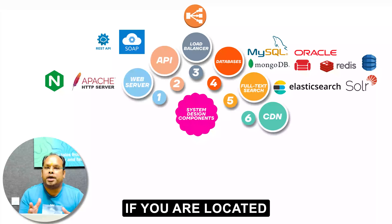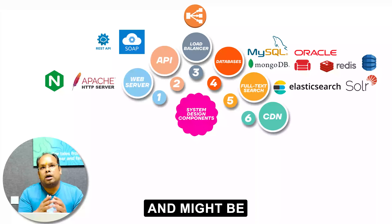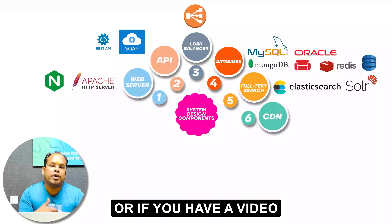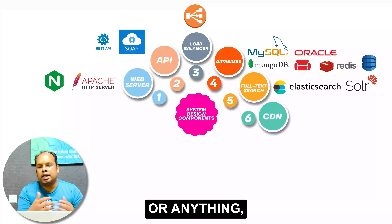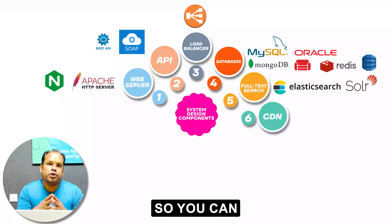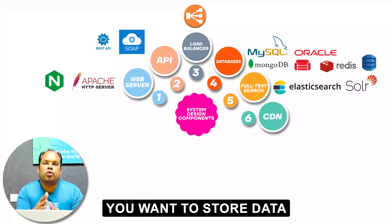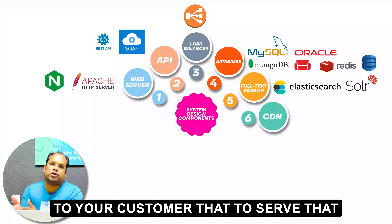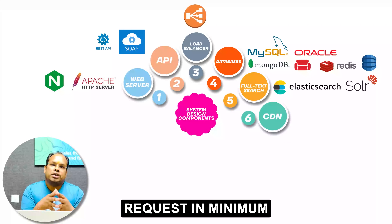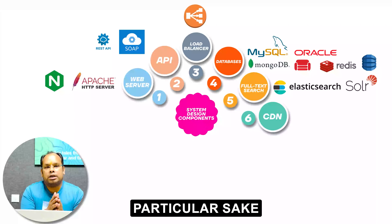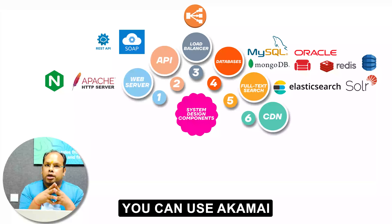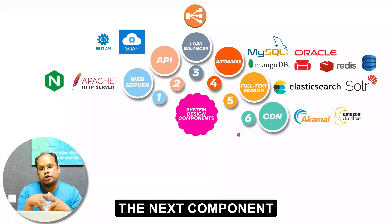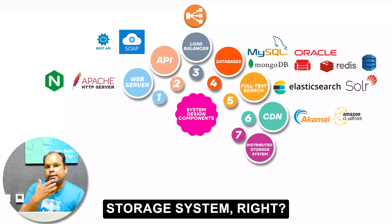Number six is CDN. If you are located at a distributed location and serving global traffic, or if you have a video-related platform like Instagram that is highly scalable, you want to cache some data nearest to your customer. You want to maintain a data center nearest to your customer to serve requests with minimum latency. For that, you can use Akamai or Amazon CloudFront as a CDN.